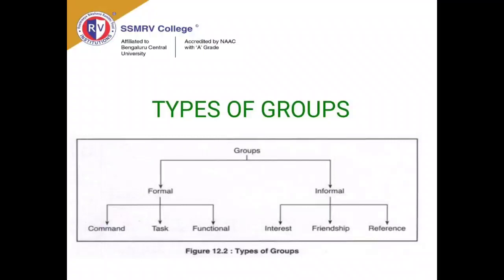The second formal type is task groups, based on accomplishing a common task. Narrowly defined or secondary tasks are given to a set of people who fulfill those tasks and report back to the supervisor. The third formal type is functional groups, based on specialization — people with specific expertise are chosen to work toward specialized goals and also report back to the supervisor. All three formal types share one common thread: reporting back to the supervisor.